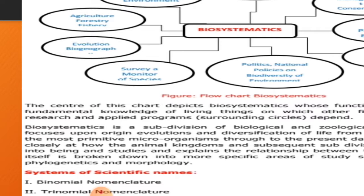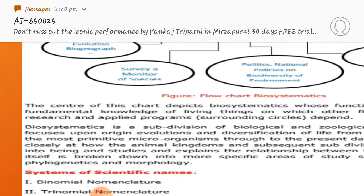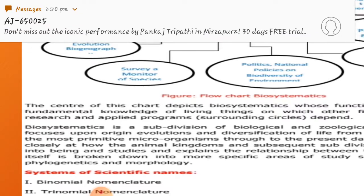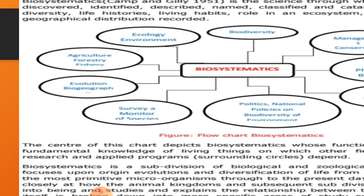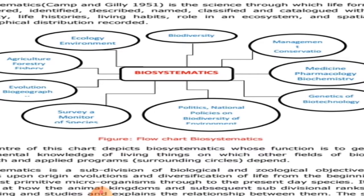Biosystematics ایک بہت وسیع سائنس ہے جس کے ساتھ بہت ساری فیلڈز منسلک رہتی ہیں، جن میں ecology، environment، biodiversity، medicine، biochemistry، genetics، biotechnology شامل ہیں۔ اس کے علاوہ political and national policies on biodiversity، monitoring، evolution، agriculture، forestry، اور fisheries کی branches بھی biosystematics سے touch کرتی ہیں۔